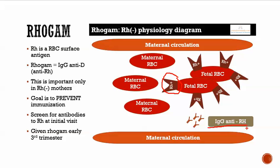Preventing this from happening is the goal of using RhoGAM. Clinically, the first thing is to find out if someone is RH negative or not, because if they're positive you don't care. On the initial visit, if they are RH negative, that means this is going to be an issue. You don't have to worry about whether the fetus is RH positive or negative — just assume it's positive, because it's something that could be really bad. So if you have an RH negative person in the third trimester, you make sure that they get RhoGAM.